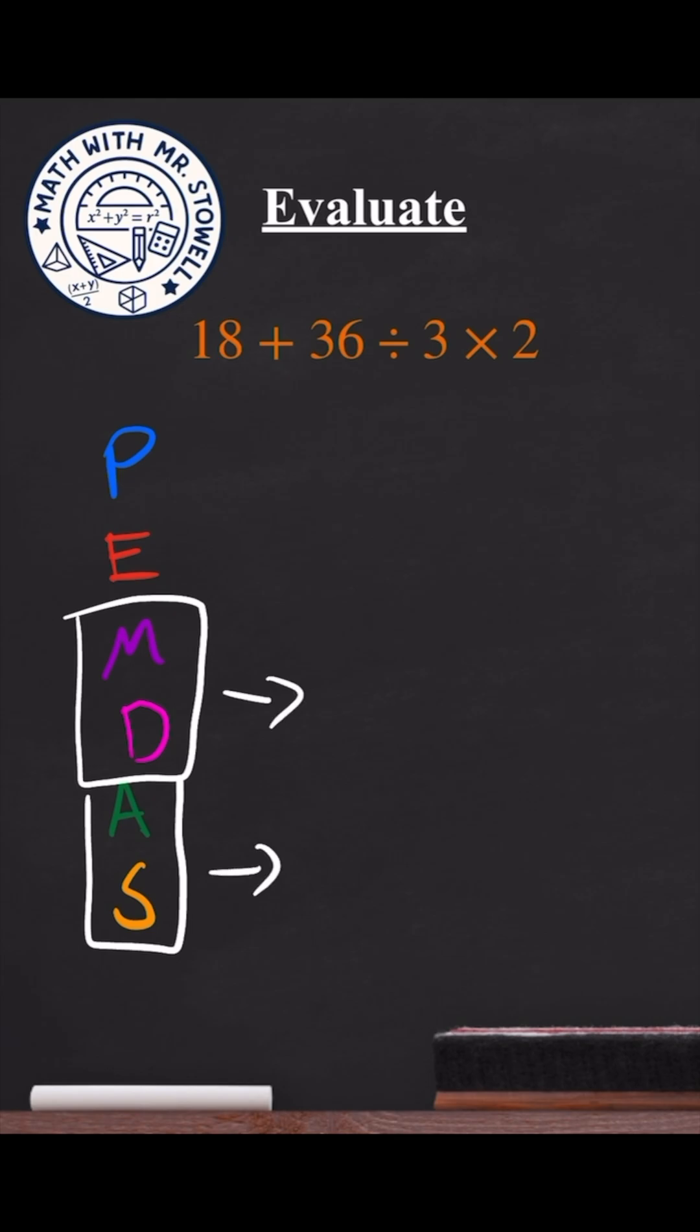So what we want to do is look at our expression and just go down the list. Do we have any parentheses? No, we don't. Do we have any exponents? We don't. Do we have any multiplications, divisions?